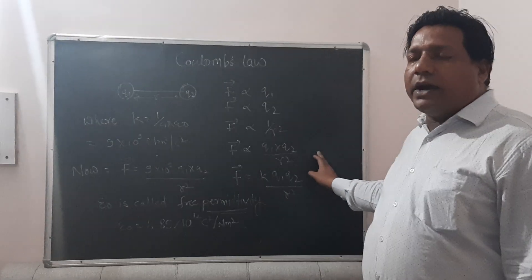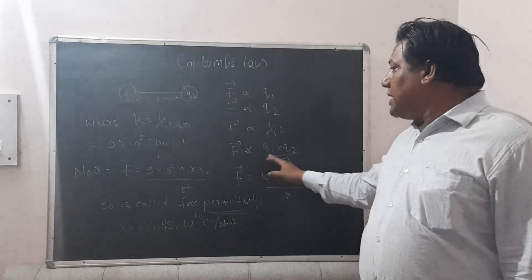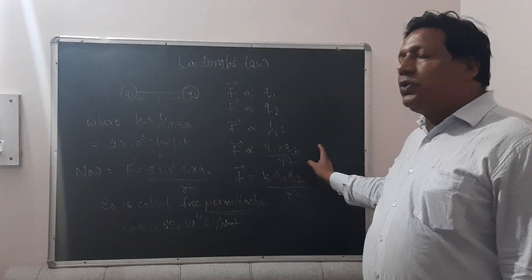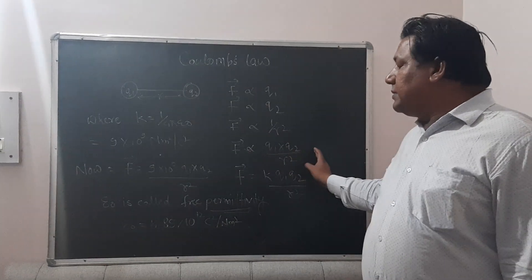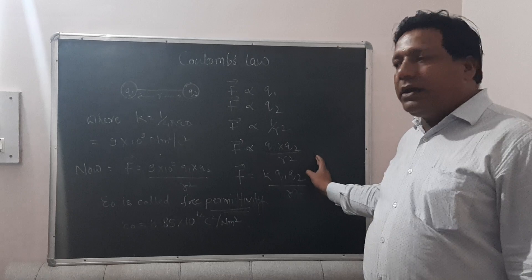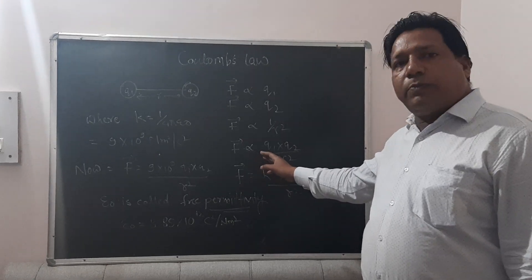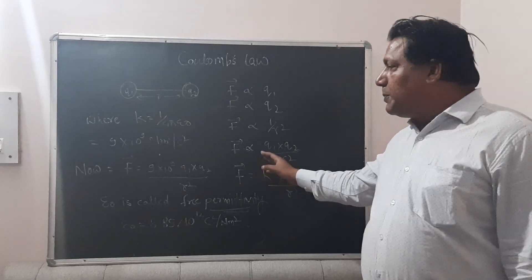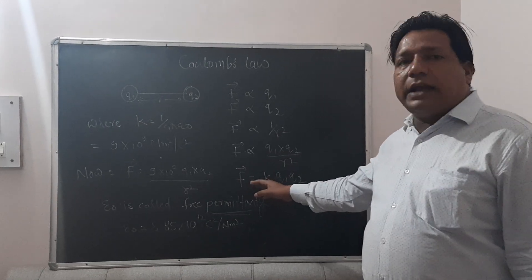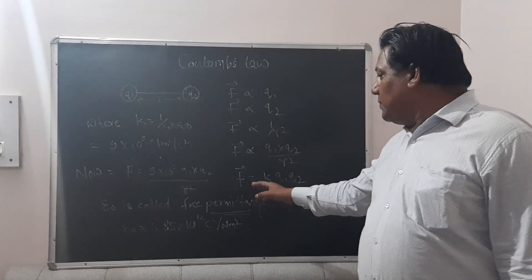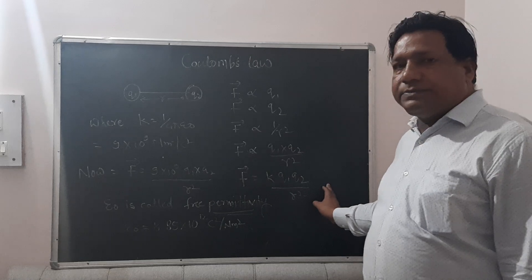Combining these three statements — F is directly proportional to q1, F is directly proportional to q2, and F is inversely proportional to 1/r² — we get one final statement: F is directly proportional to q1·q2 divided by r². To remove the sign of proportionality, we add a constant k, giving us F = k·q1·q2 / r².